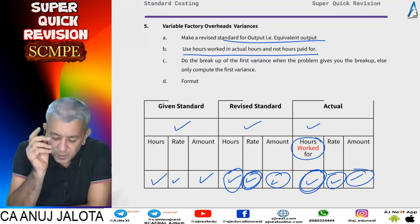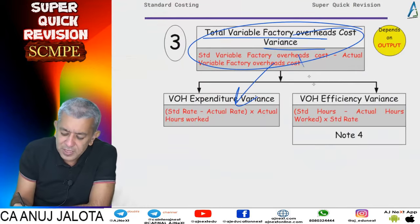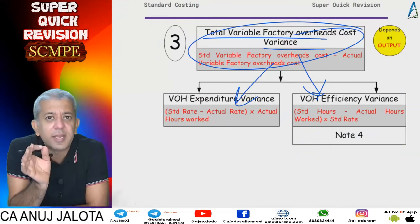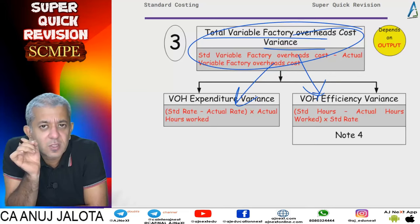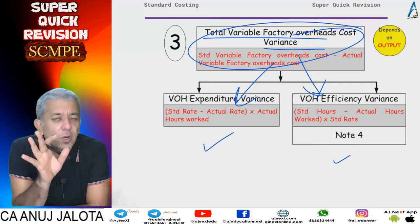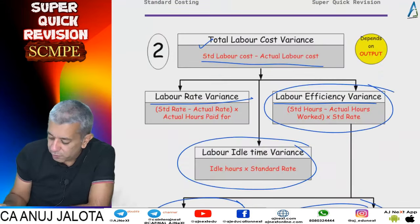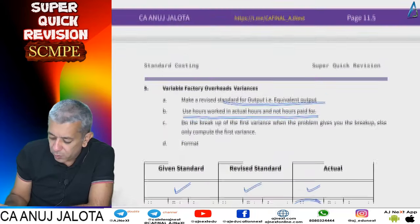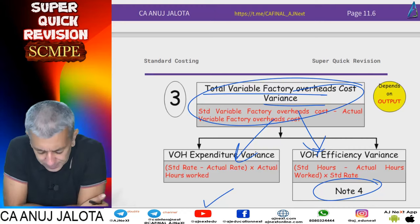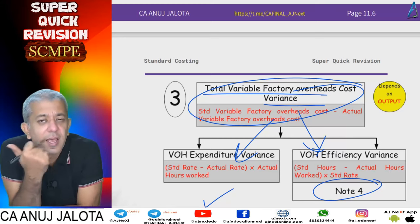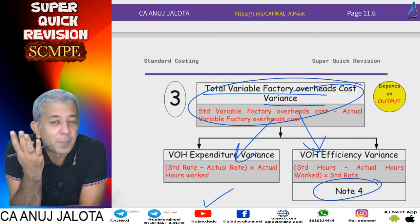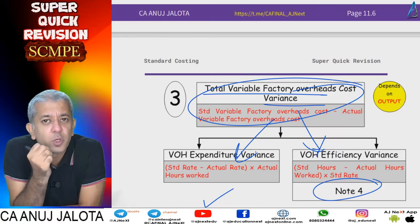One important point: the breakup into expenditure variance and efficiency variance should only be done if the problem gives you details of variable overheads — meaning they give you hours or the rate per hour. If that detail is not given, it is not required. Also, I had written Note 4 here; there will be one more place where Note 4 appears — that will be under fixed overheads, which I will explain then. I've covered material, labor, and variable factory overheads. Next lecture we do fixed overheads. Bye, take care.